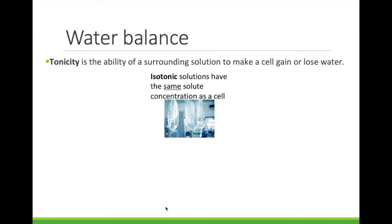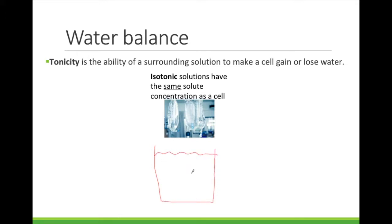Isotonic is when the solution surrounding a cell has the same concentration of solutes as the cell. For example, if we draw a beaker full of solution and put a cell inside, the surrounding liquid has the same relative concentration of solutes as the inside of the cell. A real-world example would be IV fluid, which is made to have the same concentration of solutes as your blood so it doesn't affect the water concentration in your blood.